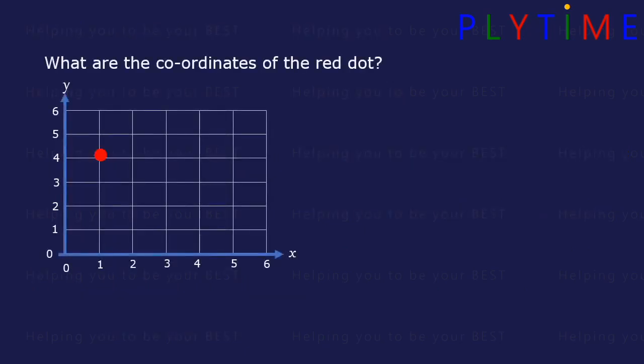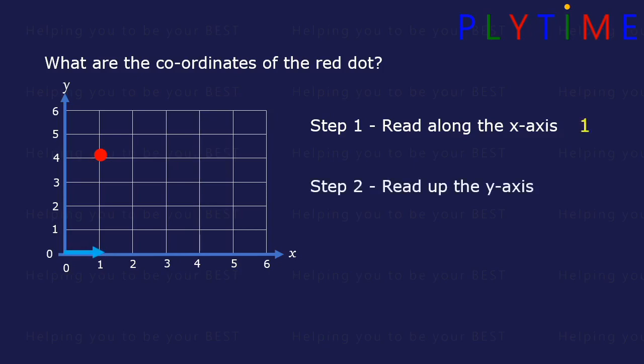What are the coordinates of the red dot here? First read along the x-axis to the dot, which is to 1, so x is 1. Then read up the y-axis to the dot, which is 4, so y is 4.